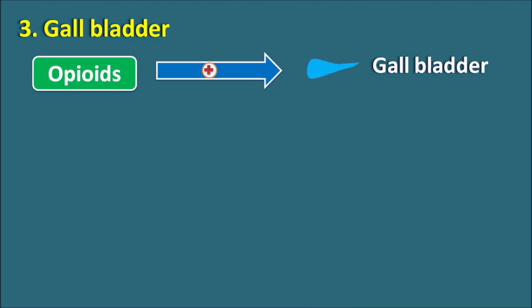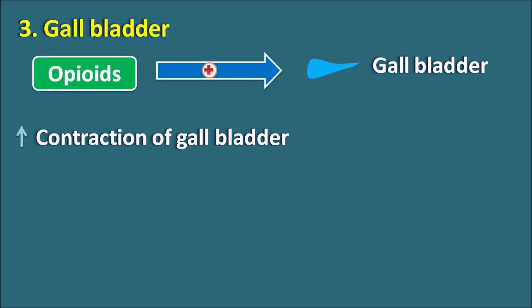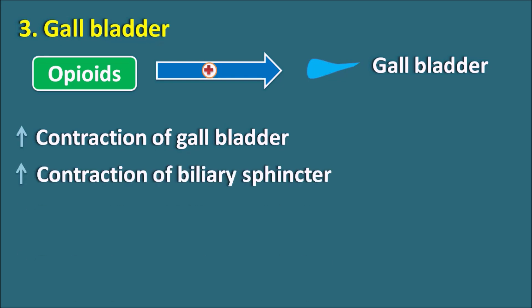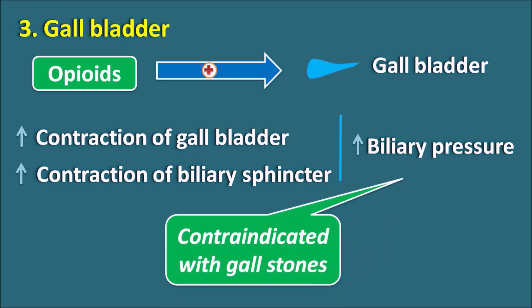The third stimulatory target is the gallbladder. Opiates produce a stimulatory response on the gallbladder — unlike their inhibitory response on GI smooth muscle — increasing contraction of the gallbladder as well as contraction of the biliary sphincter. This increases intra-biliary pressure, thereby increasing biliary colic. That's why opiates are contraindicated in controlling pain associated with gallstones, because opiates would increase intra-biliary pressure which may increase the pain associated with gallstones.